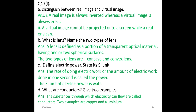Define electric power and its SI unit. The rate of doing electric work, or the amount of electric work done in one second, is called electric power. The SI unit of electric power is watt. What is a conductor? Give examples. Substances through which electricity can flow are called conductors. Two examples are copper and aluminum.